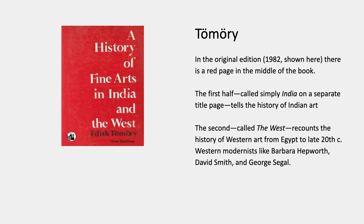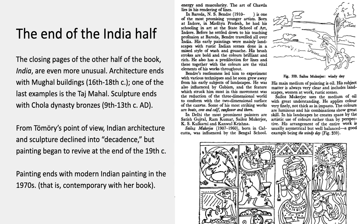In the original edition, the book has a red cover and a red page right in the middle. The first half — from the first title page up to the red page — is simply called India and tells the history of Indian art. The second half, after you turn the red page, is called the West and recounts the history of Western art from Egypt to the late 20th century. The Western modernists Tamuri discusses include Barbara Hepworth, David Smith, and George Segal, with an emphasis on English artists because of the colonial heritage.